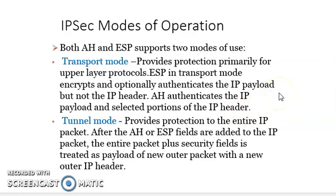The second mode is the tunnel mode, which provides protection to the entire IP packet. In transport mode, authentication is not provided for the total IP header — only for the IP payload. But in tunnel mode, protection is provided for the whole IP packet. After AH and ESP fields are added, the entire packet plus security fields are treated as the payload of a new outer packet with a new outer IP header.